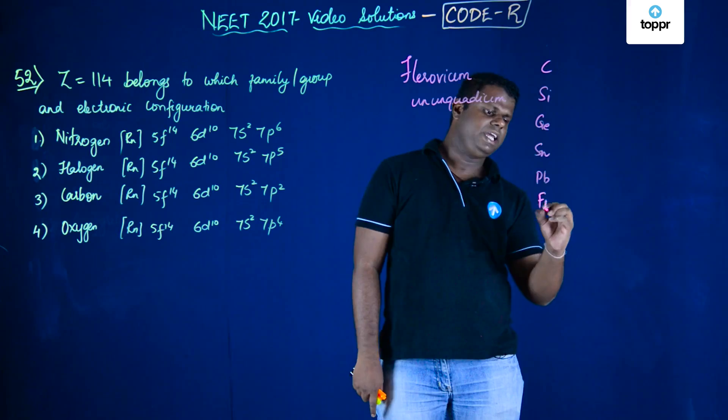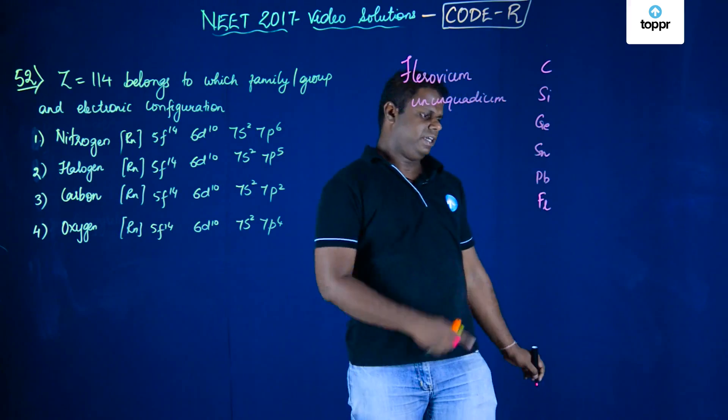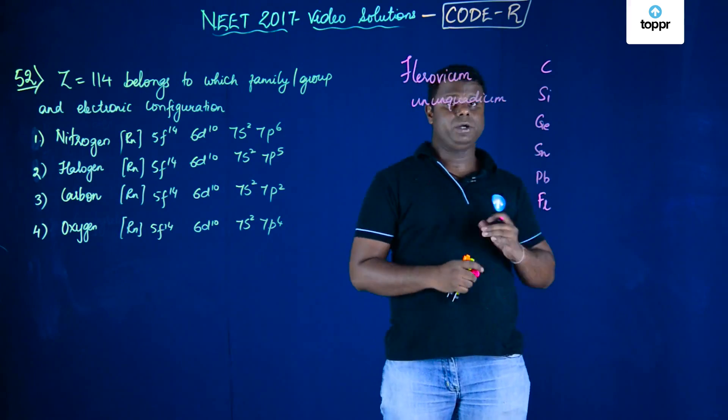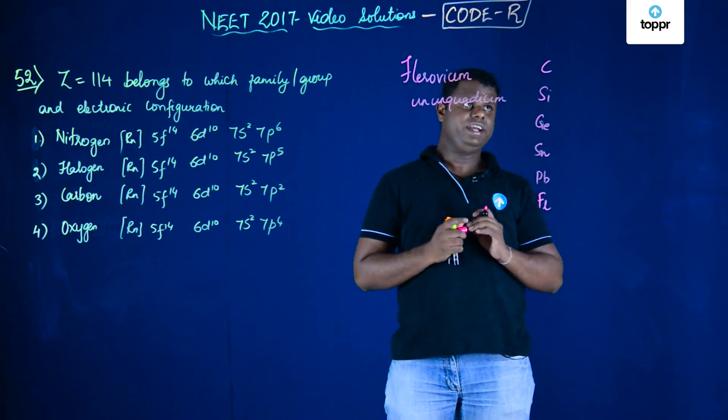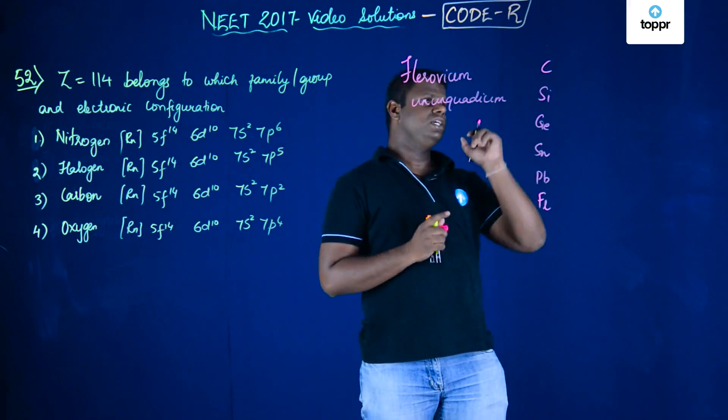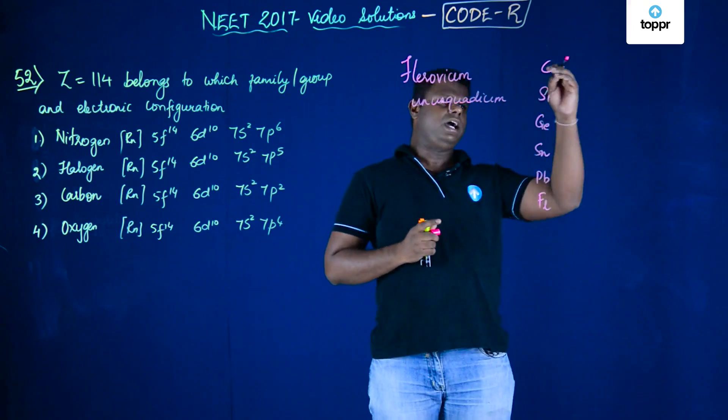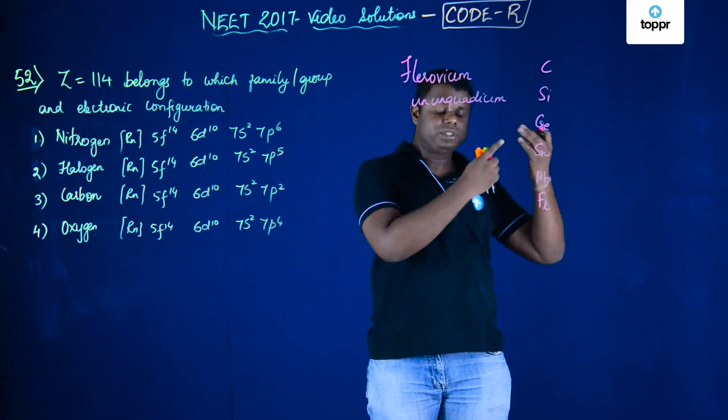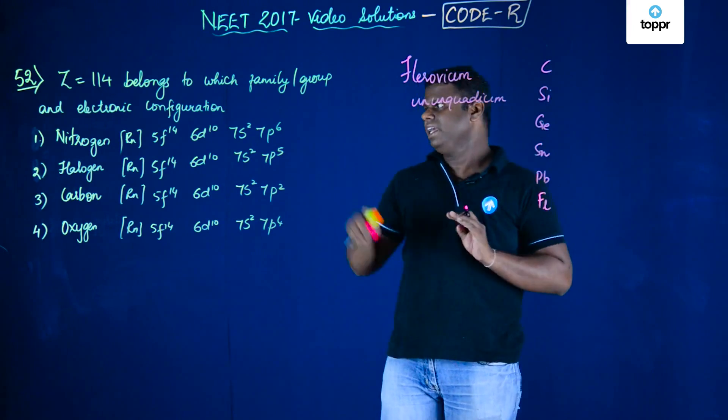Its symbol is Fl — not F, because F is fluorine. So the group members are carbon, silicon, germanium, tin, and lead, and Flerovium comes after lead.